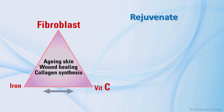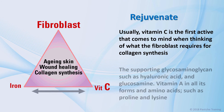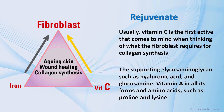The target cell, of course, is the fibroblast, and you again must consider what this cell requires for building the connective tissue collagen. Usually, vitamin C is the first ingredient that comes to mind when thinking of what the fibroblast requires for collagen synthesis, and, of course, the supporting glycosaminoglycans such as hyaluronic acid and glucosamine, vitamin A in all its forms, and amino acids such as proline and lysine.